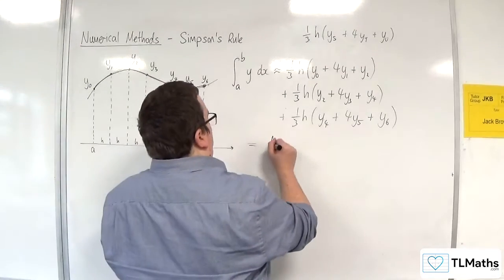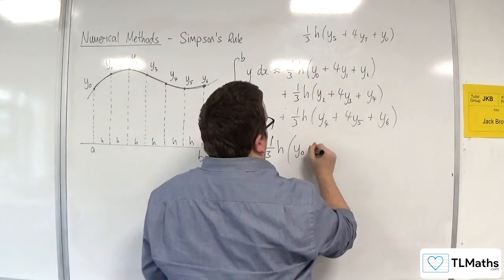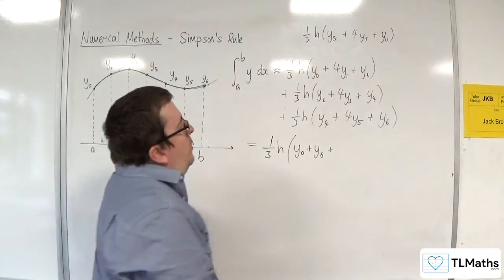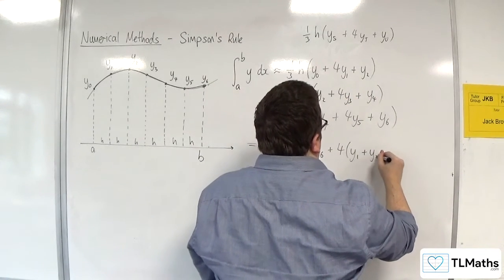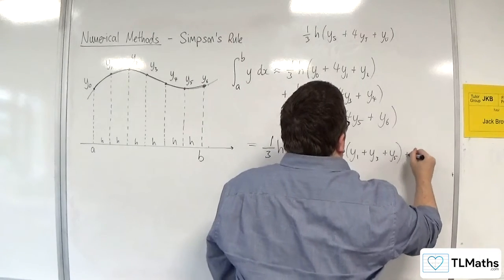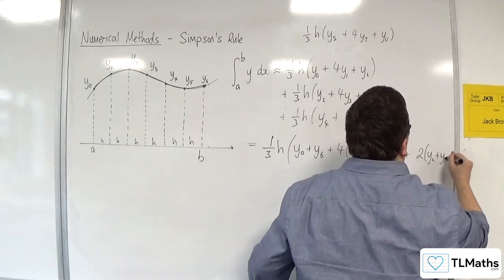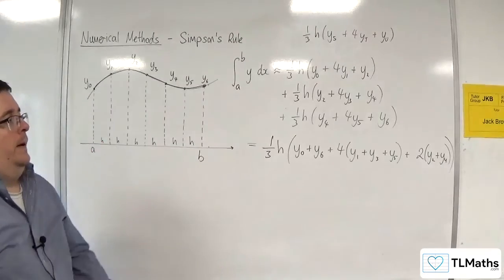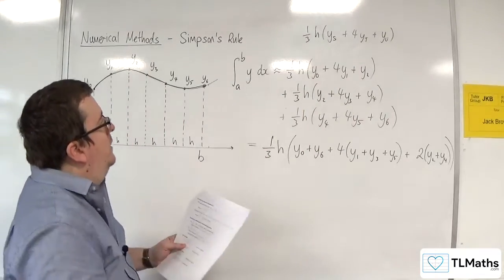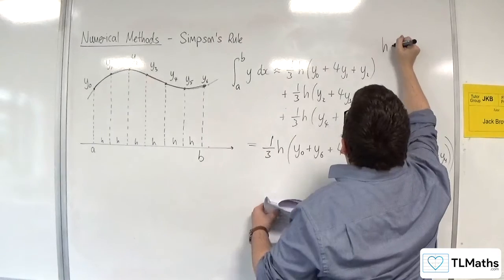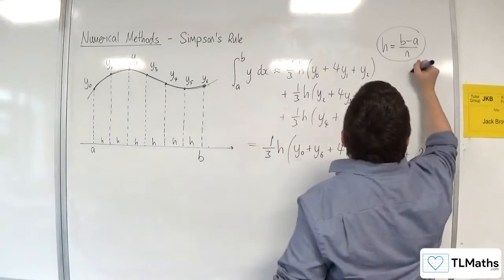So, if we bring these all together, you'll notice we've got the one third h in all three. We've got the y0 and the y6. So, the first and the last. We've got four lots of y1, y3, and y5. And two y2s and two y4s. And so, this is Simpson's rule. Which, if... And it's in your formula booklet as well. Where, of course, h is given in the regular form. B minus a over n. Where n is even. As we've explained.